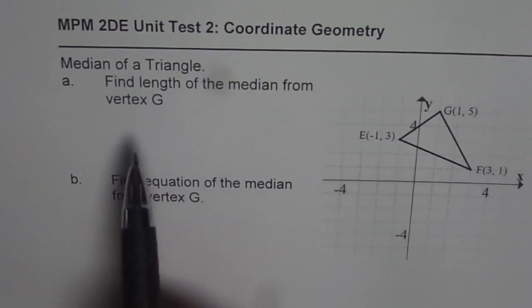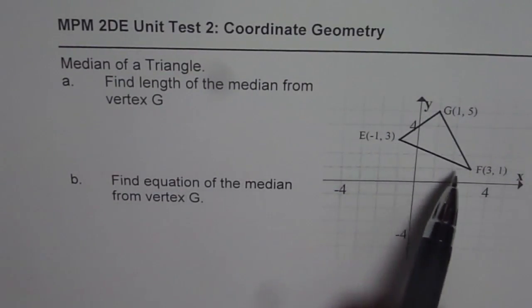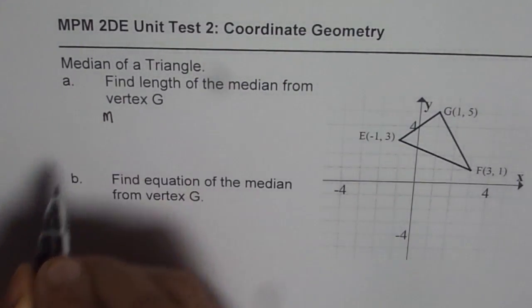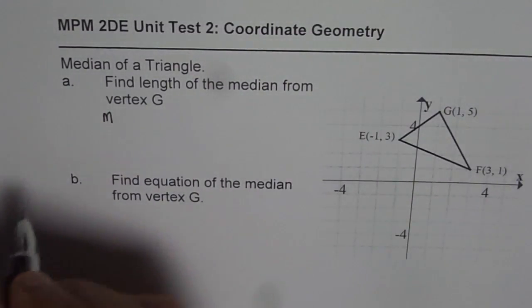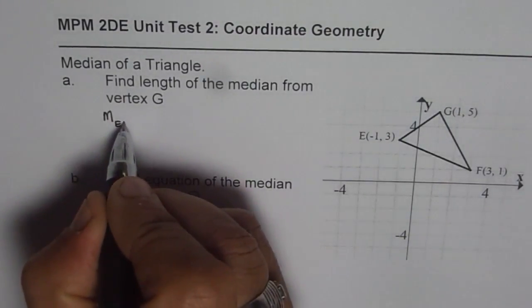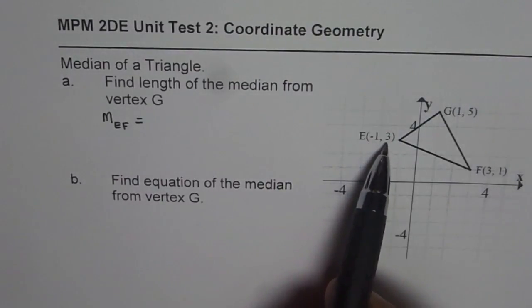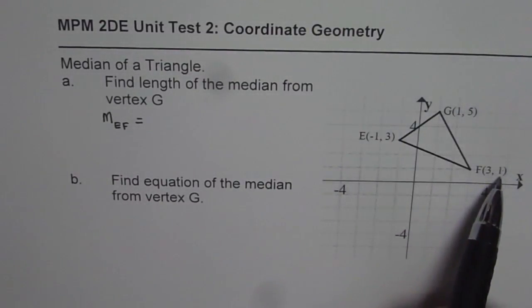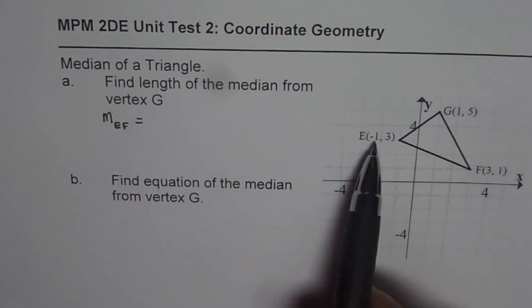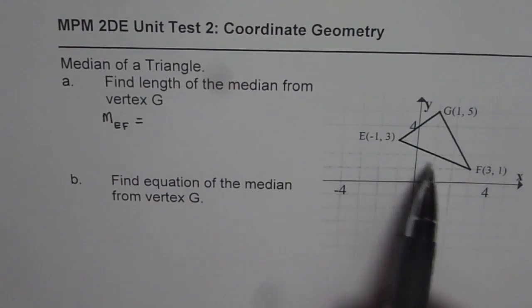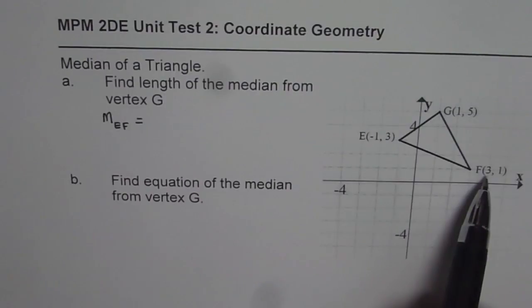Now opposite to G, the line is EF. So we need to find midpoint, let's say midpoint of line EF. So what is the midpoint of line EF? Coordinates of E are minus 1, 3. For F it is 3 and 1. Midpoint will be average of x values and y values. They should give you x and y coordinates respectively.